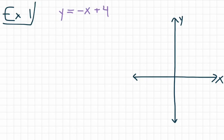Let's begin with a little review on how to graph a single line. We're going to be graphing two lines on the same coordinate grid, but just to start, a little review. Our first equation is y equals negative x plus 4. To graph this, there are two things we need to identify: a value for m and a value for b.